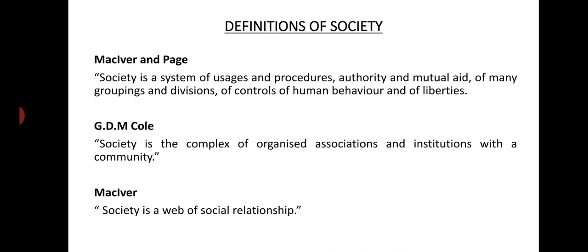As per G.D.H. Cole, society is the complex of organized associations and institutions within the community — so it includes all organized associations of human beings plus social institutions such as family, and all these together constitute society. As per MacIver and Page, it is a system of usages and procedures, which includes all the norms, the procedures, and the culture of the society.